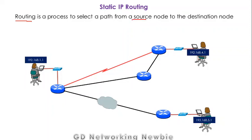So we have a source and we have a destination. Routing has to select a route from the source node to the destination node, or from the source network to the destination network.